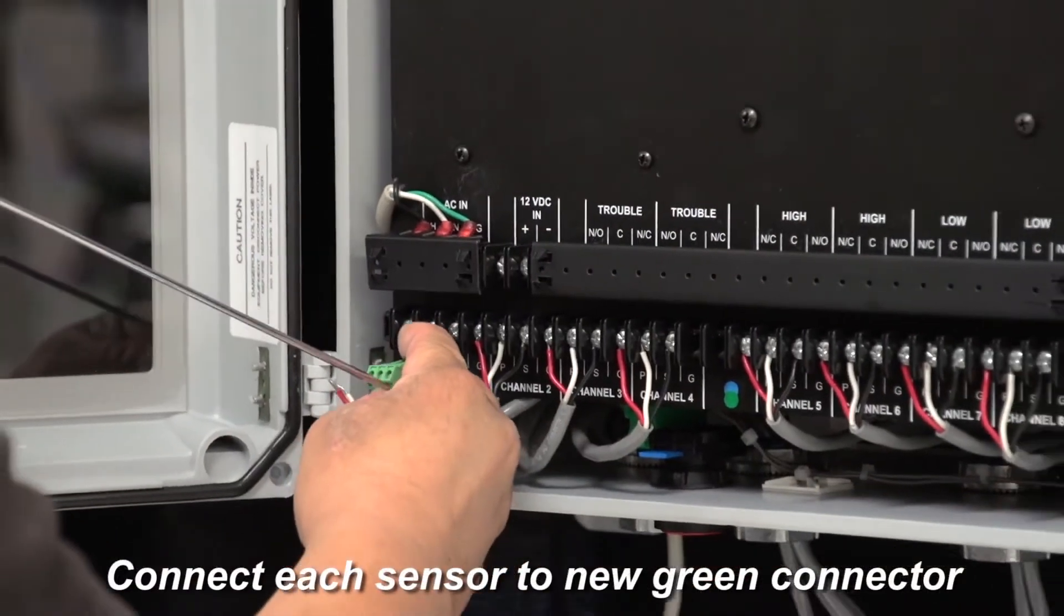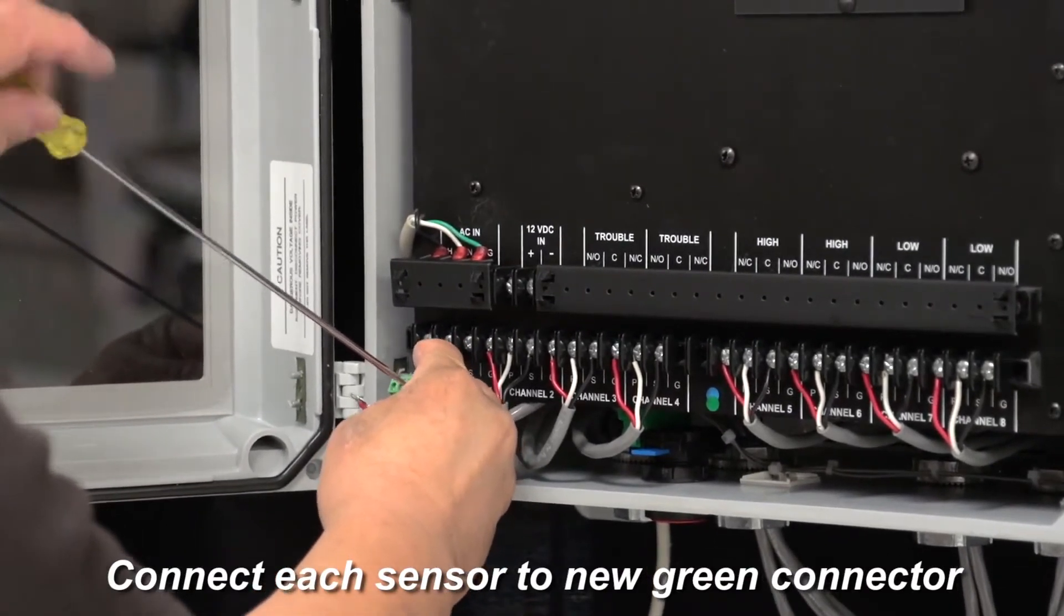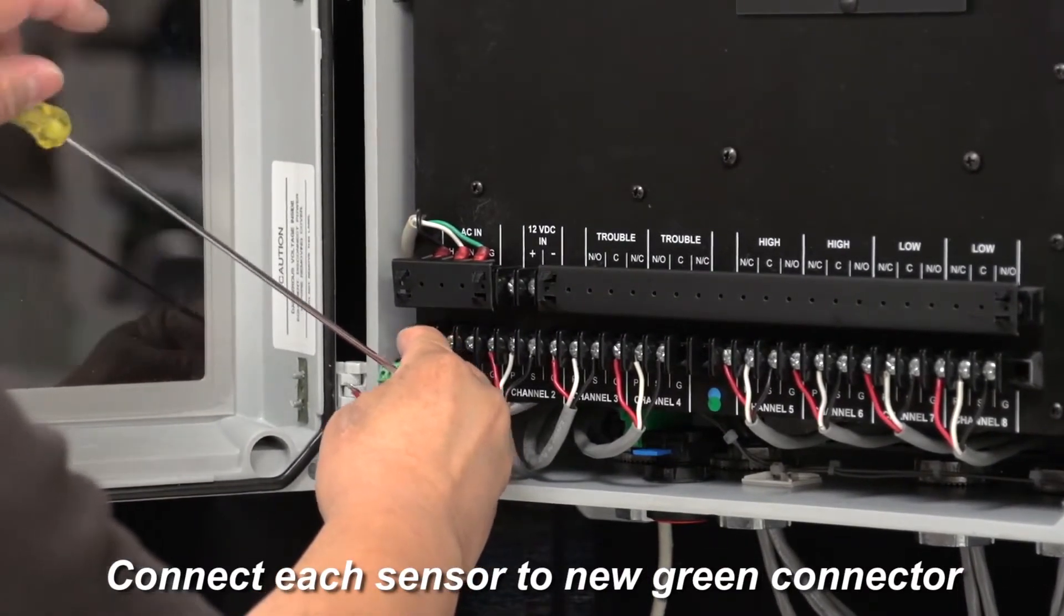Then, for each channel, connect the PSG wires into one of the green sensor connectors that you took from the PSG Sentry bus board on your new panel.